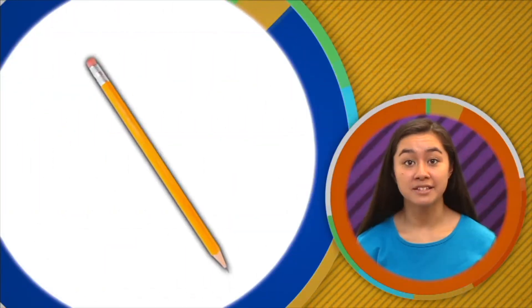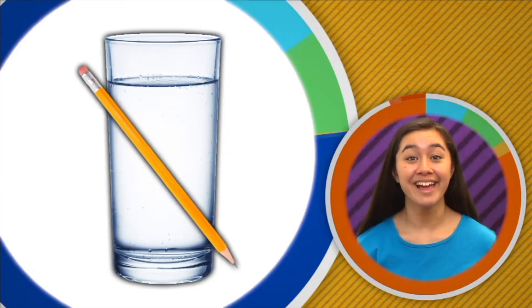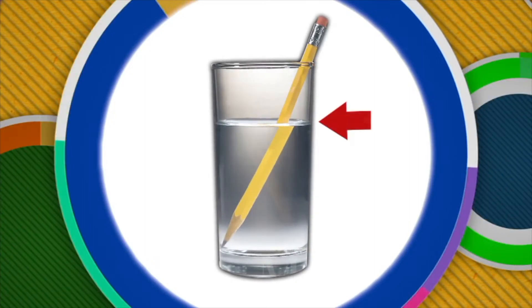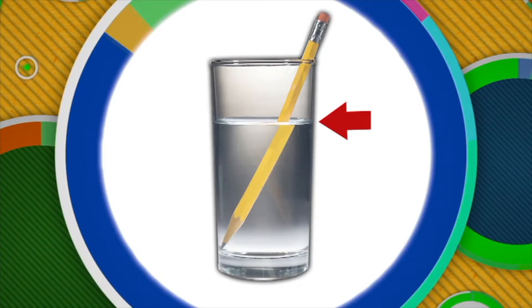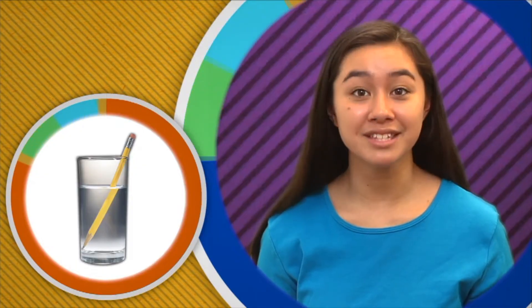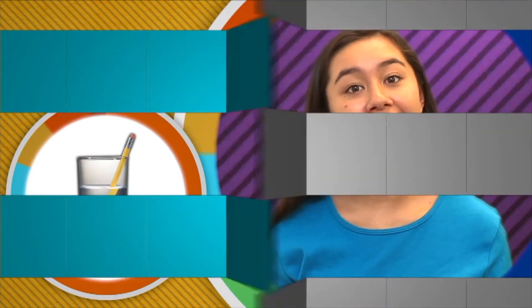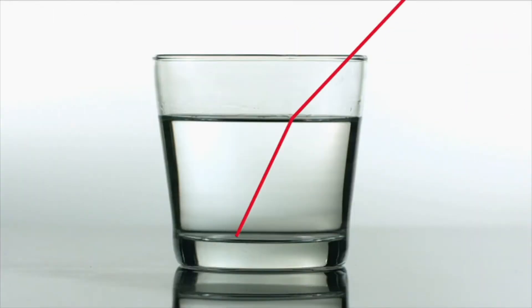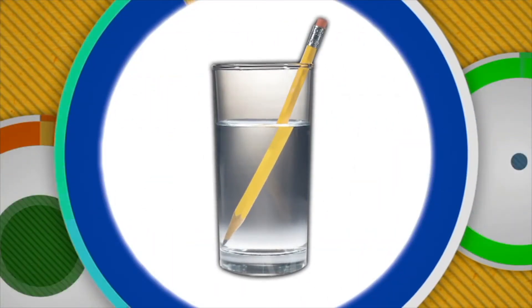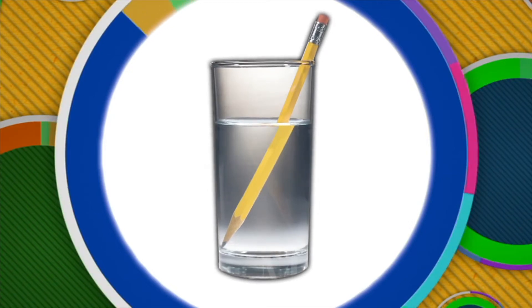Here's a riddle you can try with your friends: can you get a pencil to bend using only water? Sure — just watch. Ta-da! The pencil appears bent, and all it took was placing the pencil in a glass of water. But did the pencil really bend? No, it only appears that way when it is partially submerged in the water. As light passes from air to water, it experiences a change in speed and the light bends. The same happens as the light goes back into the air. So the light rays — not the pencil — are actually bending, and that changes our perception of how we see the pencil.